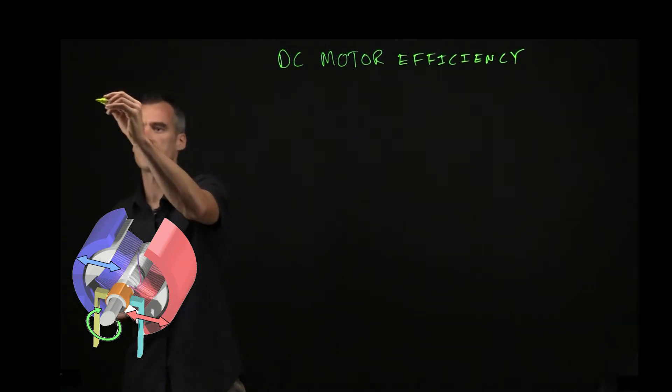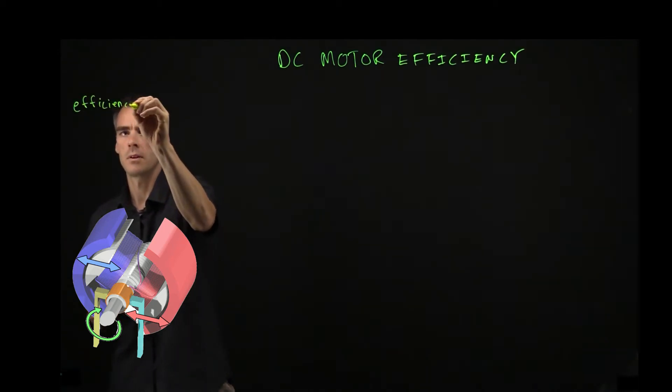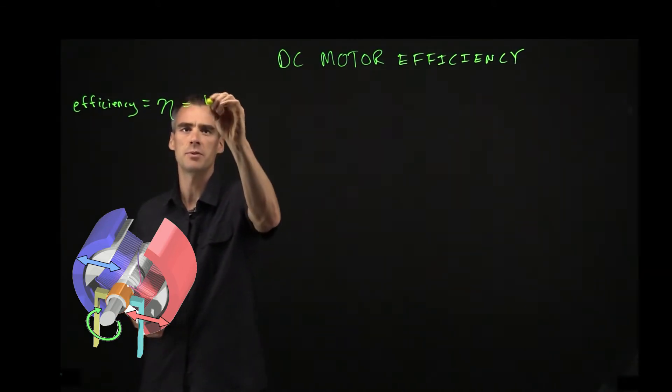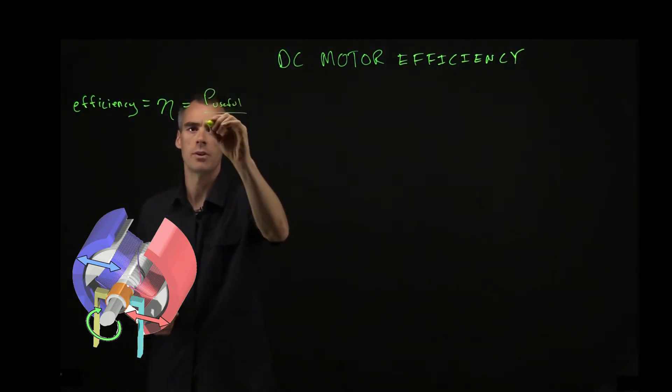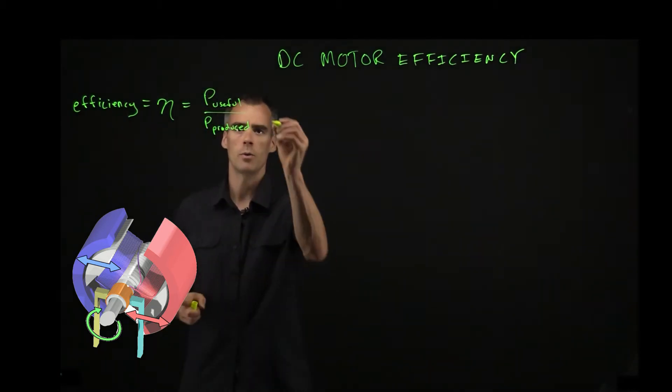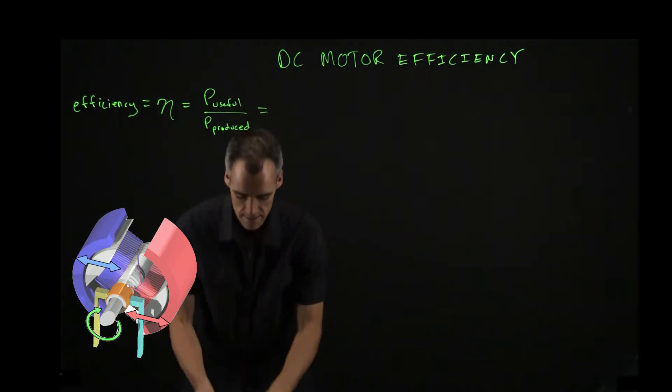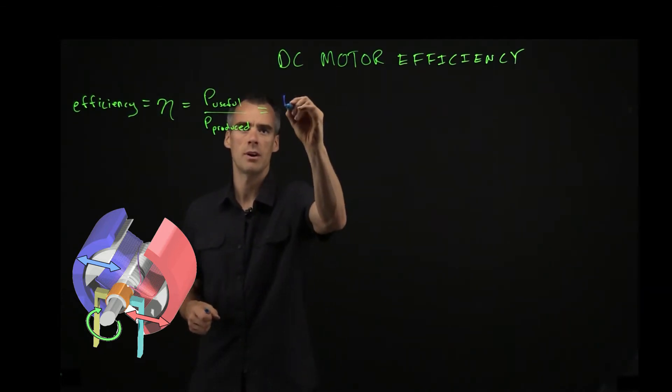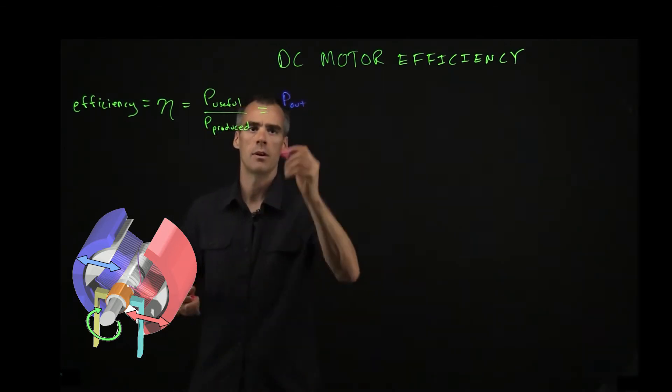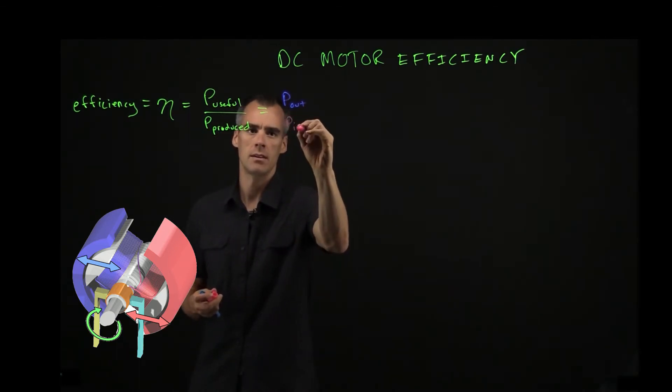In basic terms, our efficiency, we'll call that eta, and we can define it as the useful power over the power produced through this ratio, and of course it's going to be less than 100%. Another way that we could look at that is as the ratio of our power out, which is in blue here, over our power in, in pink.